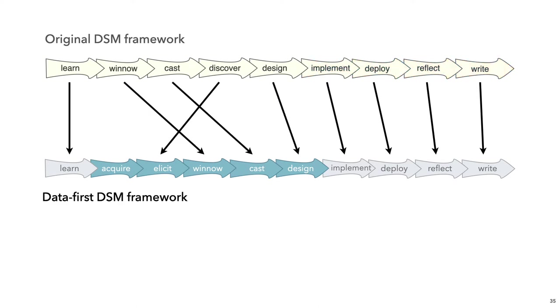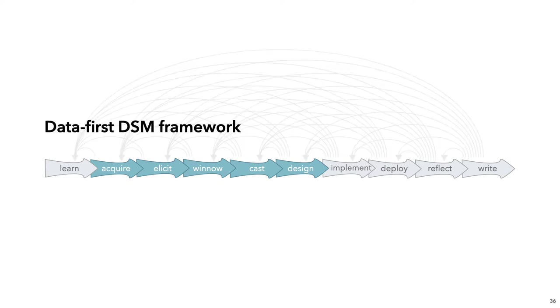Here you can see a direct comparison. Similar to the original framework, the data-first stages emphasize iteration — additional data sources may be incorporated, and data and task abstractions are refined continuously.